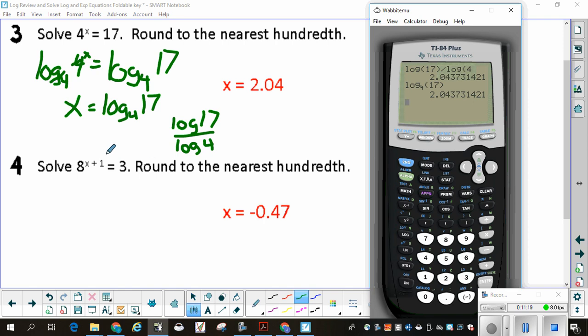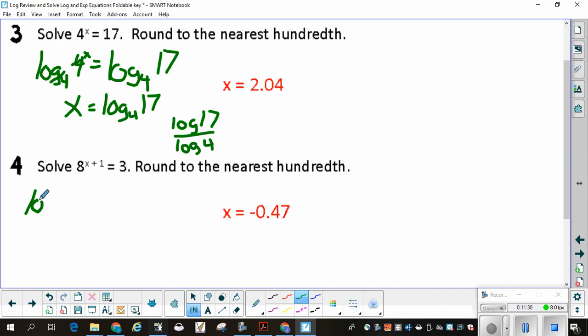Now, 8 to the x plus 1 is equal to 3. I can change 8 to base 2, but I can't change it to base 3. So I'm going to use, since this is the thing that's got an exponent, I'm going to do log base 8 of 8 to the x plus 1 is equal to log base 8 of 3. What exponent do I put on 8 to get 8 to the x plus 1? I just put on x plus 1. Log base 8 cancels with base 8.